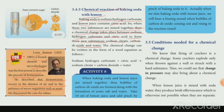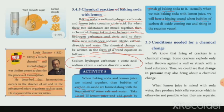The chemical changes can be written in the form of a word equation. When baking soda and lemon juice are mixed together, bubbles of carbon dioxide are formed along with the formation of salt and water. You can hear a hissing sound, and bubbles are formed, confirming that carbon dioxide is produced. That is the condition needed for chemical changes.